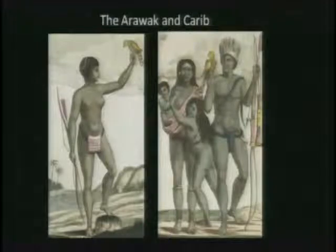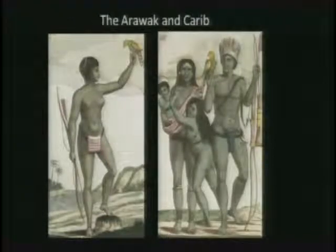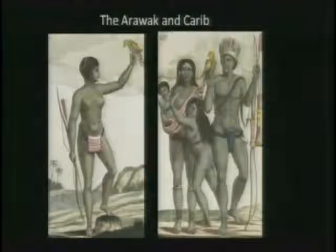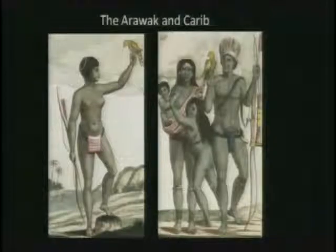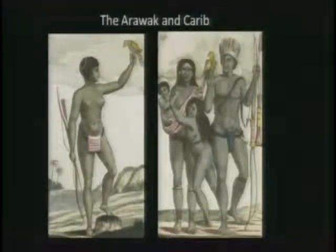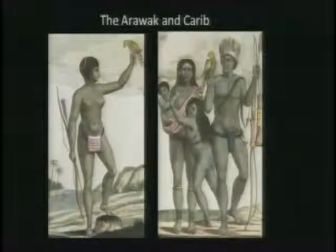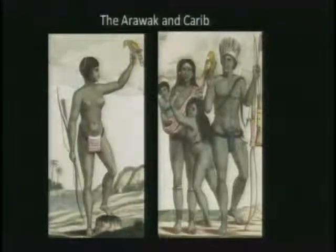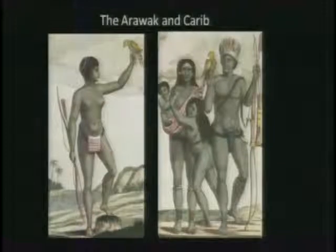The Karib were a tropical forest people who also originated in South America. More hostile in nature than the Arawak, they basically wiped out the Arawak as they moved north and took their women as brides. As a result, Karib children were often raised along Arawak cultural lines. It was reported that they barbecued their captives and washed them down with a little cassava beer. In the history of Barbados, it is known that the Karib once ate an entire French ship's crew in 1596.